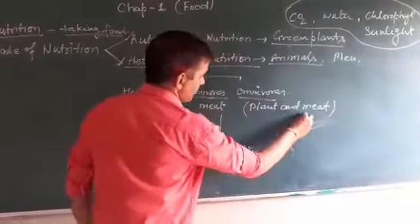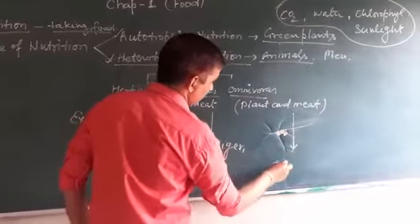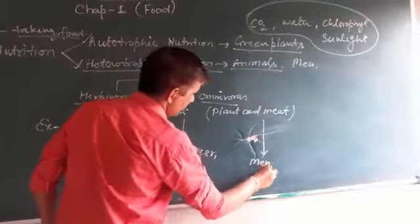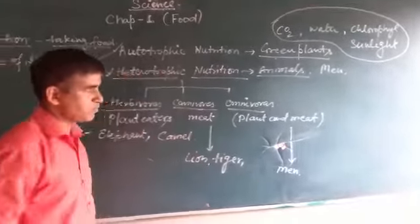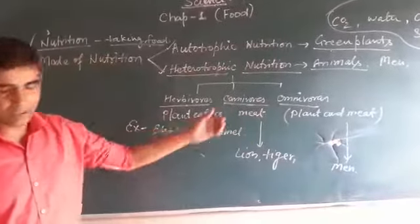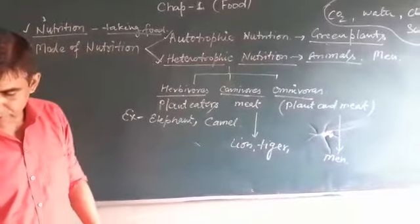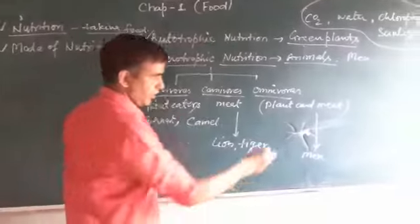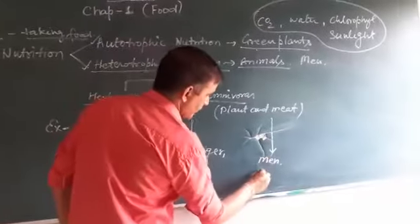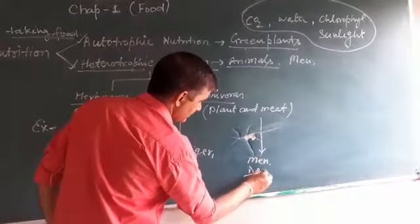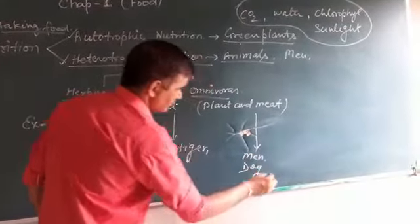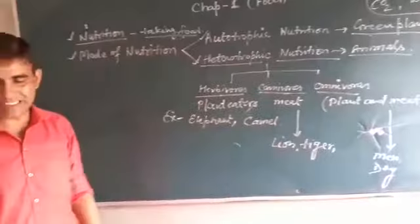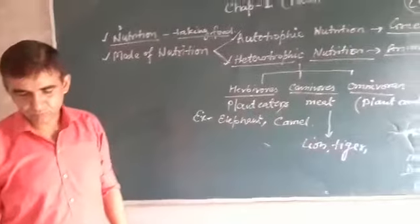In omnivorous, we can talk about humans — man is omnivorous. Dog is also omnivorous. These are omnivorous animals.